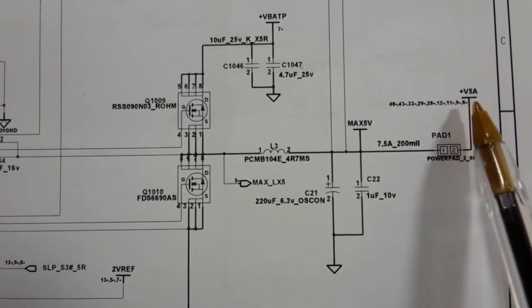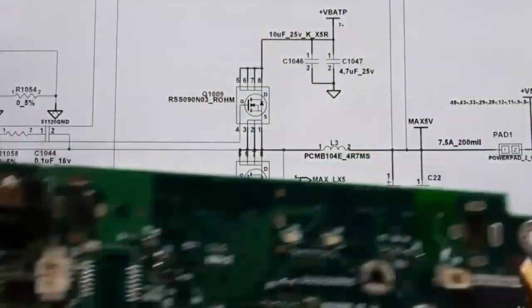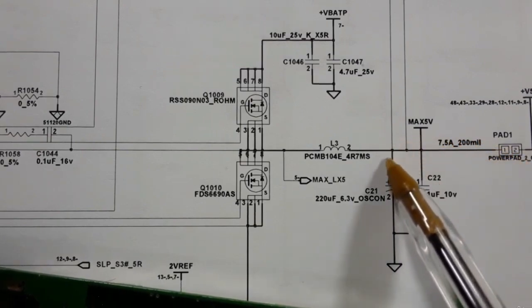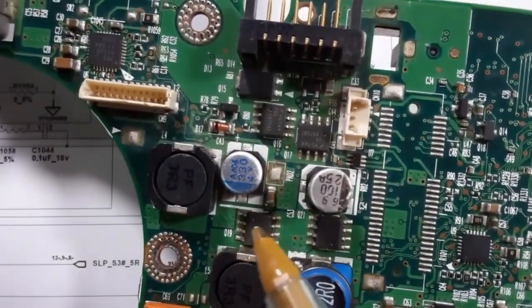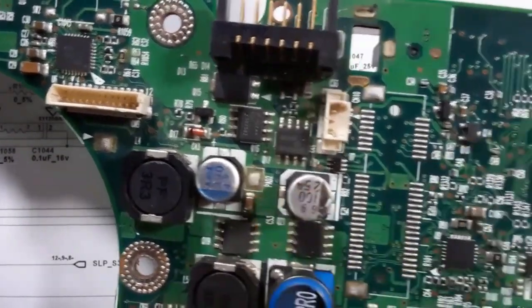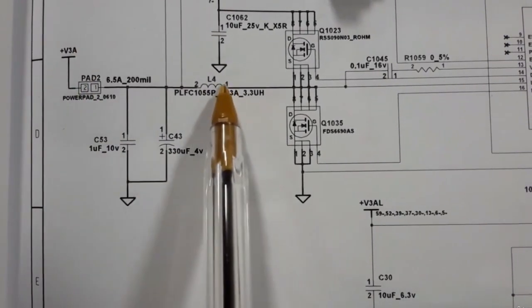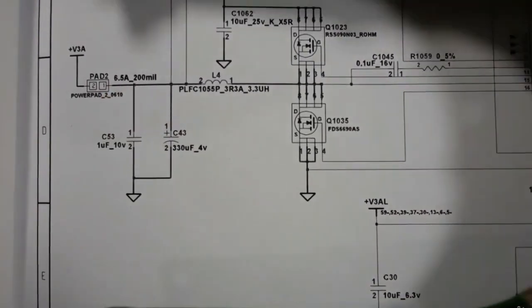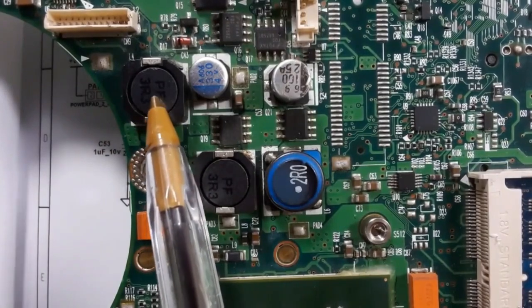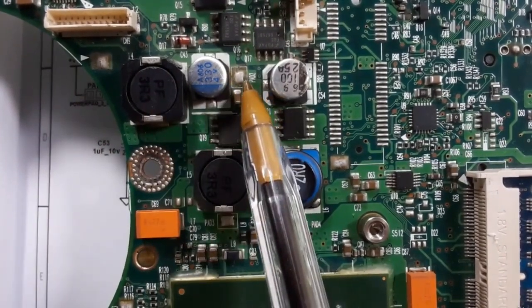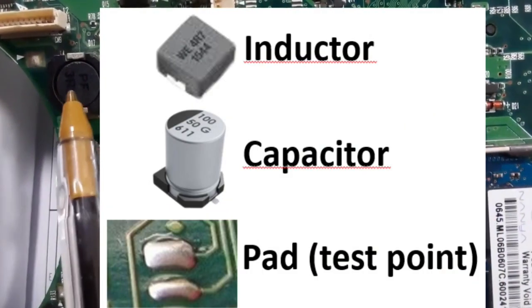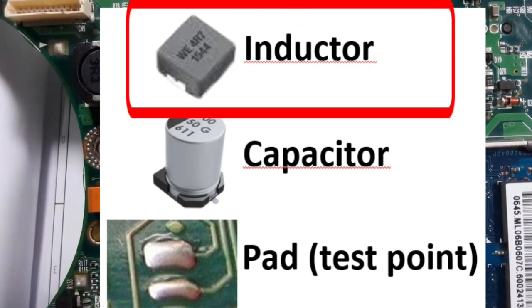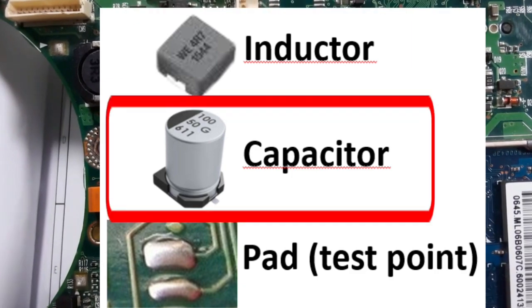At pad 1 we can check whether we get plus 5 volts or not. The pad is at this point in every channel. The pad is always next to the electrolytic capacitor and the inductor. As you can see, we have pad 4 here — this is the test point near the inductor — and another pad near the electrolytic capacitor. The same applies to the 3-volt channel: we have an inductor, capacitors, and a pad. We can check the motherboard — inductor, electrolytic capacitor, and the pad where we verify 3.3 volts. The pad is made to check whether you get the voltage or not; the inductor increases the current and capacitors filter the current.